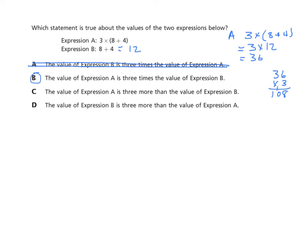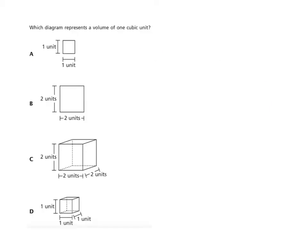Choice C — I've had students select this — the value of A is three more than the value of B. Well, if I take expression B and add three, twelve plus three equals fifteen. That's not true. And choice D: expression B is three more than expression A — I'd take expression A, add three, get thirty-nine, which does not equal twelve. So that one is wrong as well. A lot of kids do get this wrong; we just have to pay attention and work things out carefully.